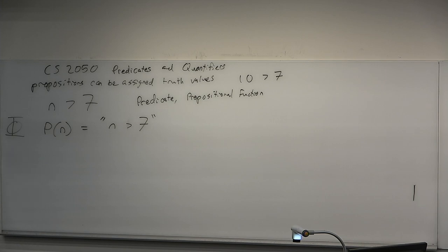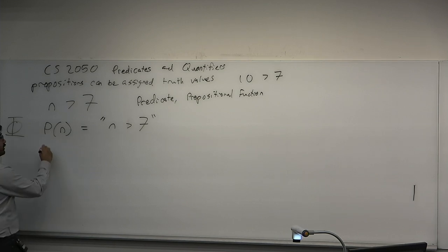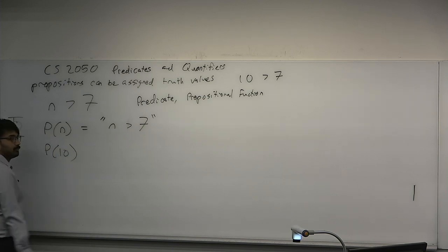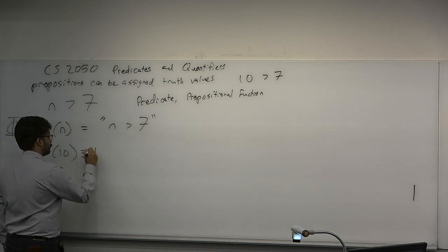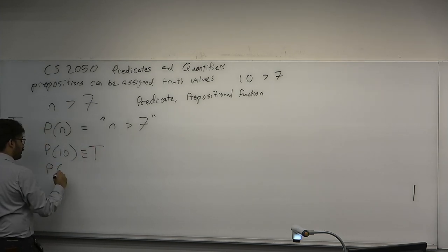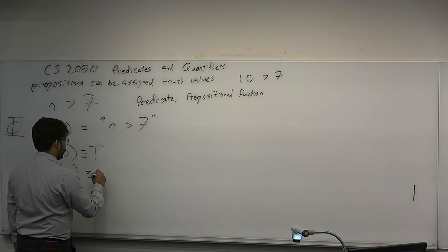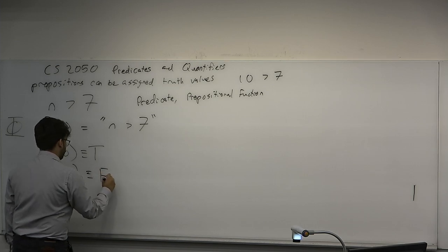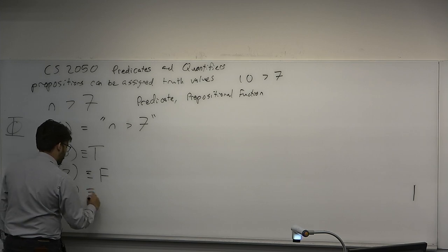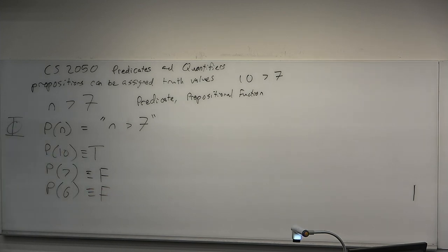P, Q, R are propositional variables — propositions. Capital P is going to be a predicate. For example, what is P(10)? True. What is P(7)? False — 7 is not strictly greater than 7. What about P(6)? So depending upon what the variable is assigned to, a predicate can be true or false. It's a function.